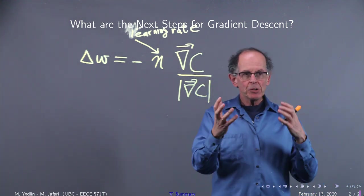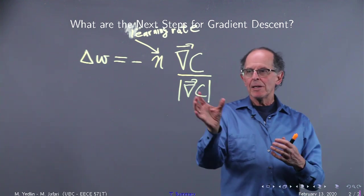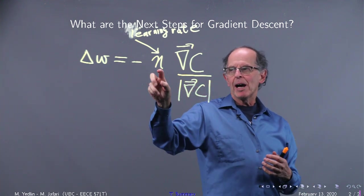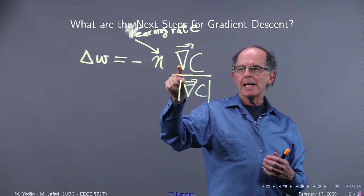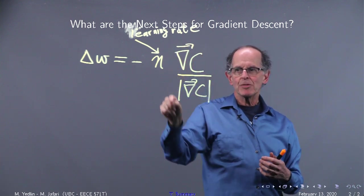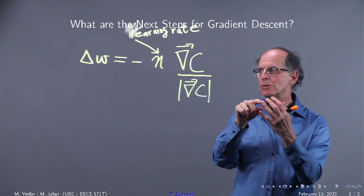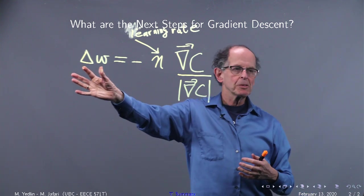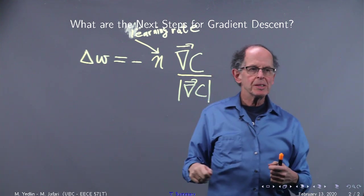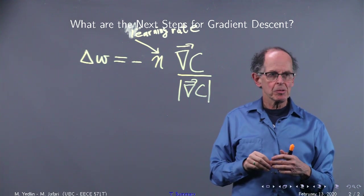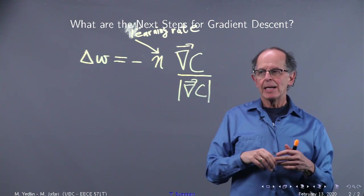So you have two things to play with. You have how far, how many steps if you like, and this is the unit vector, that's direction. So you can play with a magnitude and direction associated with the change between the old and the new values of the weights.